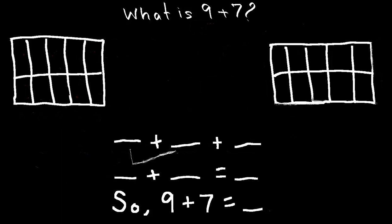Now what is 9 plus 7? I'm going to take the greater number, the 9, and I'm going to draw 9 circles in the first 10 frame. 1, 2, 3, 4, 5, 6, 7, 8, 9.